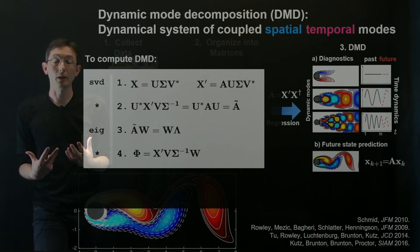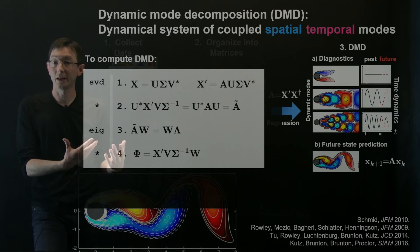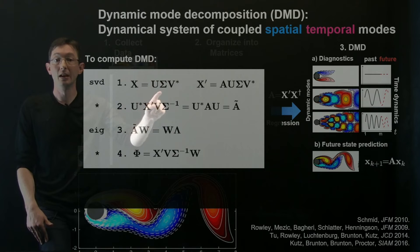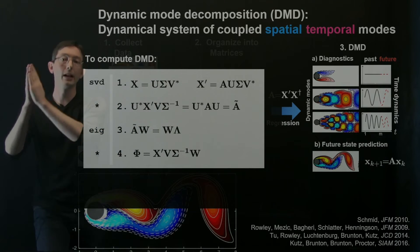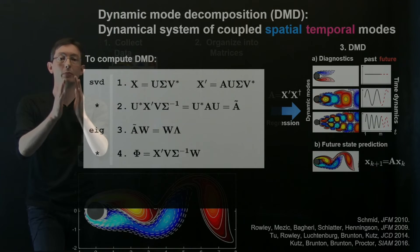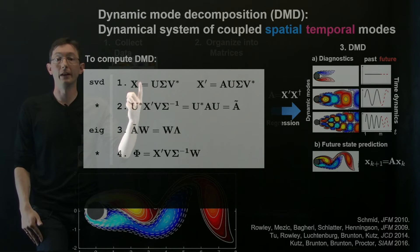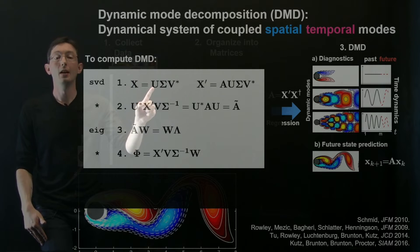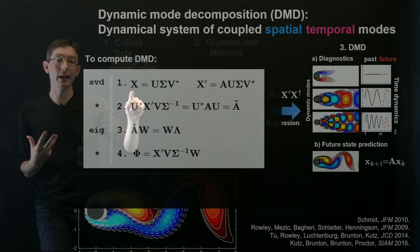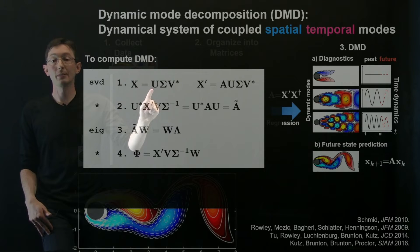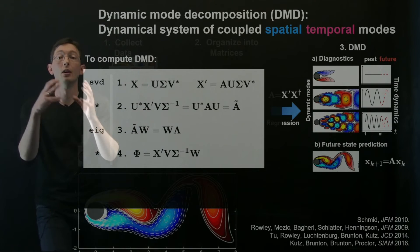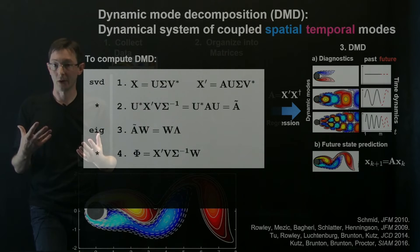So the first step in DMD is essentially computing a singular value decomposition of this big data matrix X to find your dominant coherent structures, which are the columns of this U matrix. So for those of you who are familiar with the proper orthogonal decomposition, this is just the POD. And these columns of U are your POD modes. And they're organized hierarchically from most important to least important in terms of capturing the variance of X. So in many systems, even if I have a million by thousand matrix, I might be able to approximate it with the first five columns or first 10 columns of this U matrix. Those will be the first five or 10 POD modes.